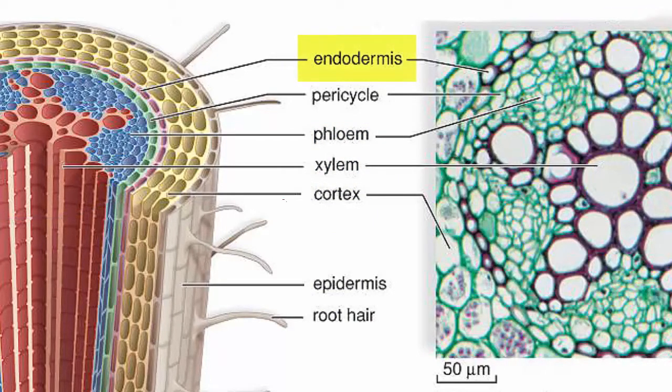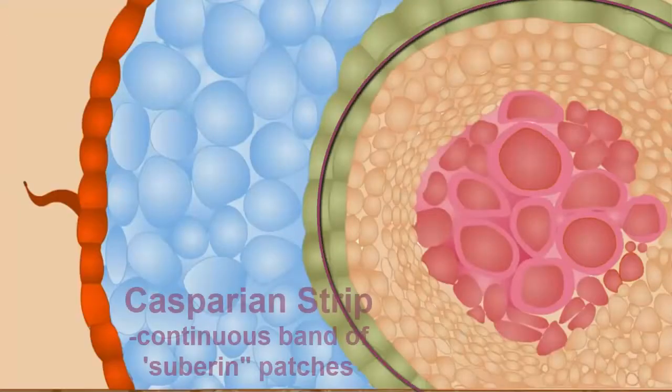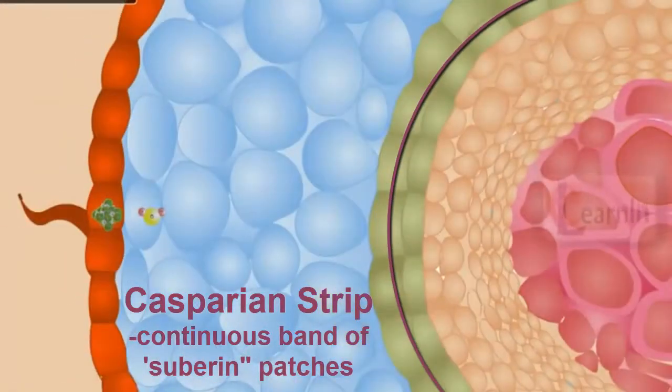The primary walls of endodermal cells are impregnated with suberin and if you can recall it is a waterproof substance. These bands of waterproof material form what they call as the Casparian strip. This layer prevents water from passing easily through the cell walls into the central conducting tissues.